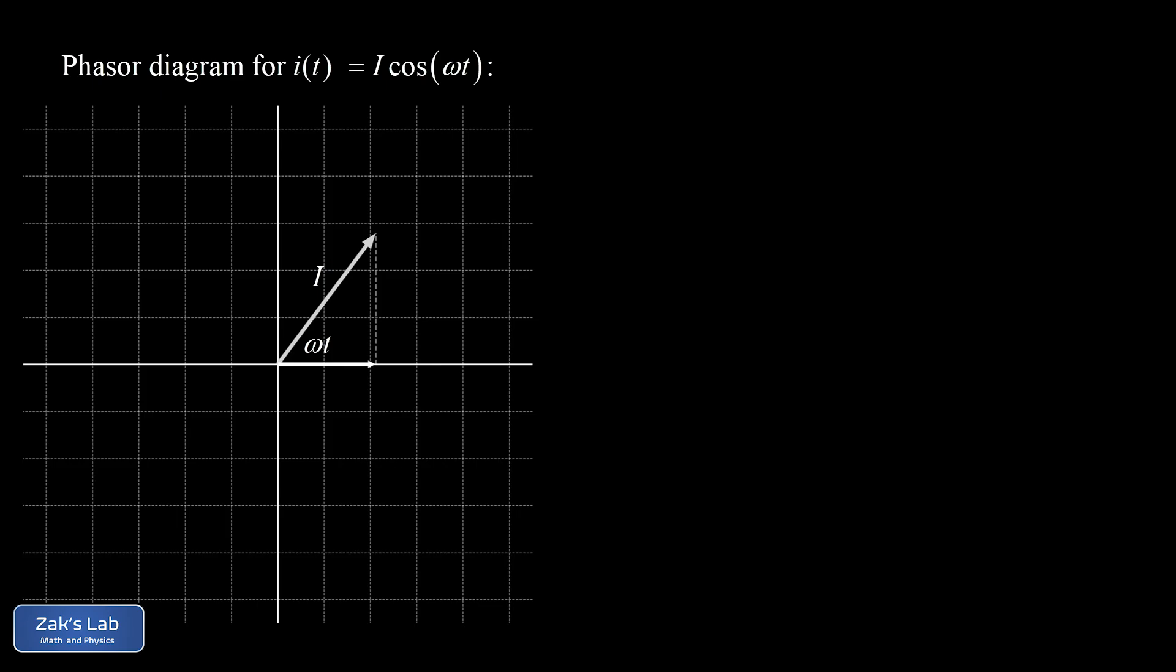Now, the actual current value at this moment in time is big I cosine omega t. And that has a geometric interpretation in this picture. It's just the projection of this current phasor onto the horizontal axis. Recall that the horizontal component of that vector is just given by hypotenuse times the cosine of the angle. So that's I cosine omega t.